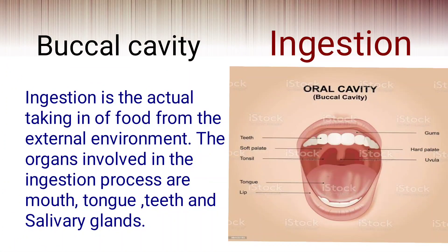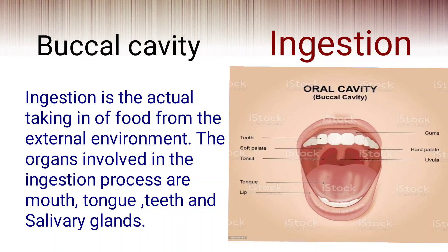Let us see the initial stage of digestion that happens in the oral cavity or buccal cavity. The parts of the oral cavity are: mouth, teeth, tongue and salivary glands. The tongue is a muscular organ that helps not only for tasting but also helps in the movement of food in the mouth and swallowing. There are three types of salivary glands which secrete saliva. Saliva has an enzyme called salivary amylase which digests carbohydrates into sugars. Here both mechanical and chemical digestion occur.